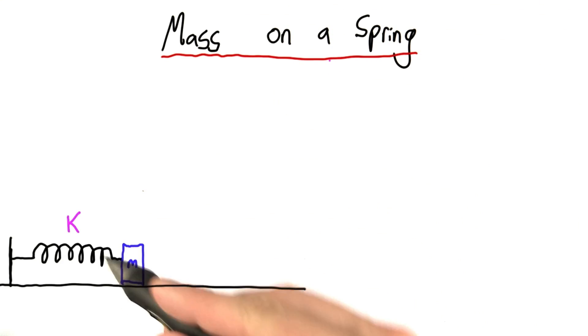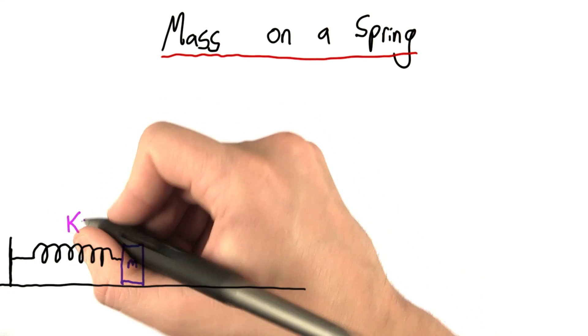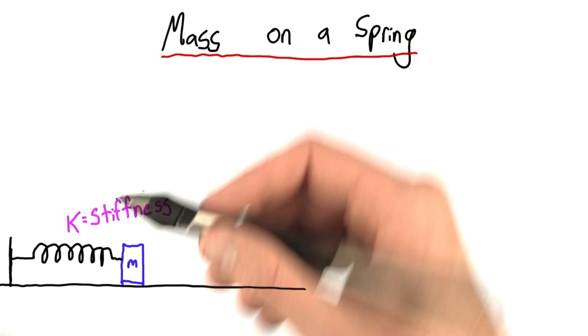When we think of a mass on a spring, there's only two numbers initially that we really care about. One is the mass of the block, and the other is k, which is a constant associated with the spring that measures its stiffness.